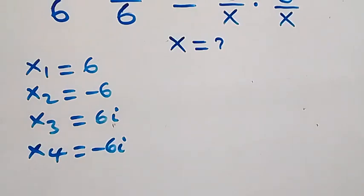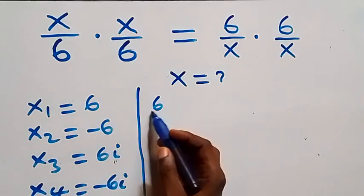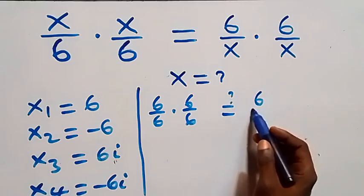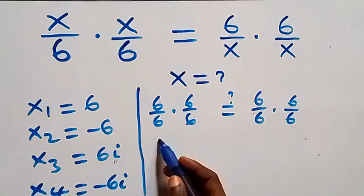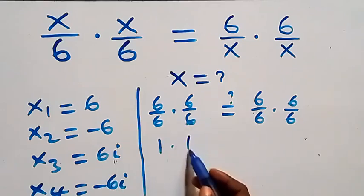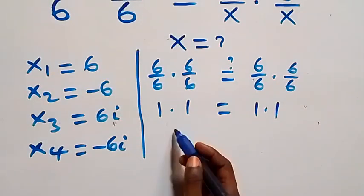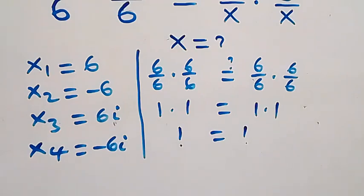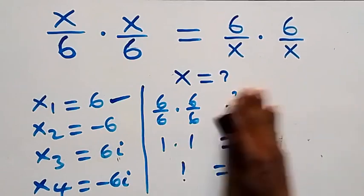Substituting x equals 6 into the equation: 6 over 6 times 6 over 6 equals 6 over 6 times 6 over 6, which gives 1 times 1 equals 1 times 1, so 1 equals 1. Left-hand side equals right-hand side, so x equals 6 satisfies the given problem.